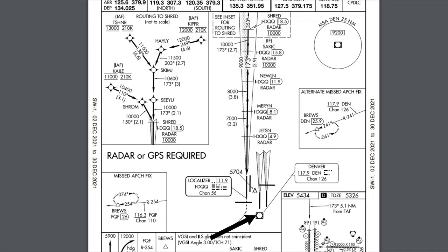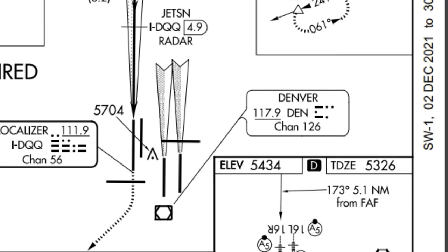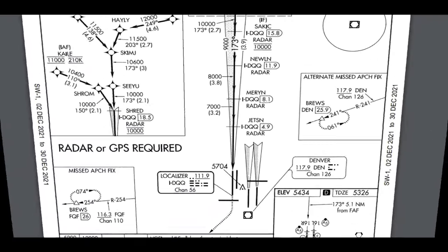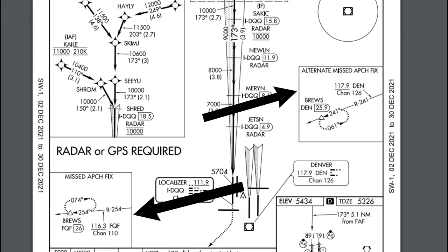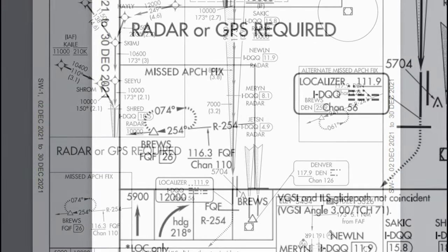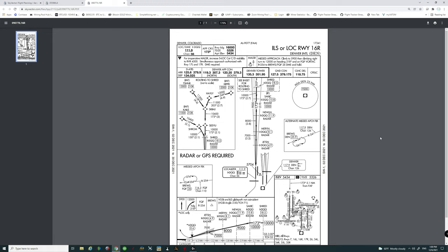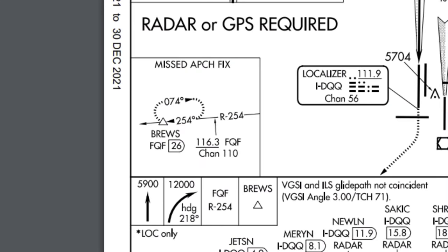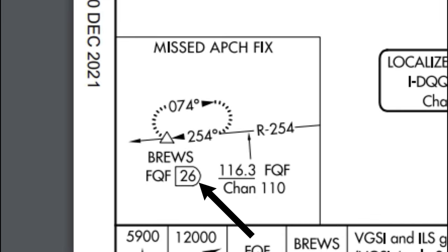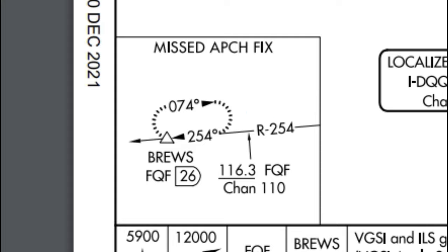Over to the right we also see the Denver VOR at 117.9, which has a Morse code identifier and DME associated with it. To the right and left we see the alternate missed approach fix and the missed approach fix. Looking at the missed approach fix it shows 116.3 — that's the VOR you tune to — as well as the radial out of the VOR. This information helps identify when you're going to hit the BRUZE waypoint. Underneath BRUZE you can see BRUZE to FQF is 26 in the hollowed-out D, meaning from BRUZE to FQF is 26 miles. Once you pass the FQF VOR, monitor your DME so that when you're 26 miles out on that radial of 254, you know you're right around the BRUZE waypoint.